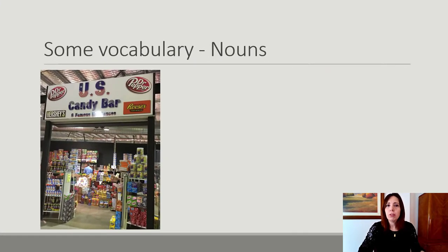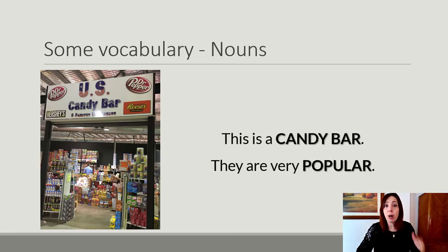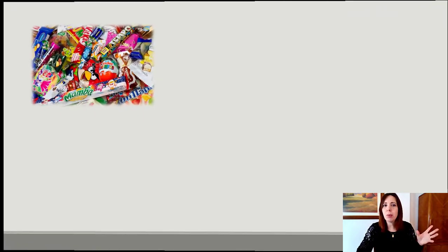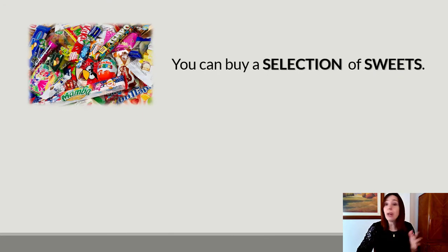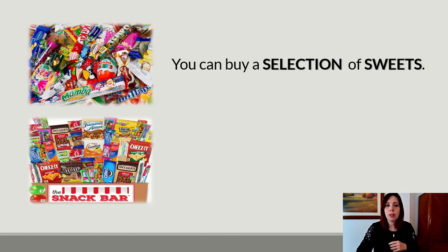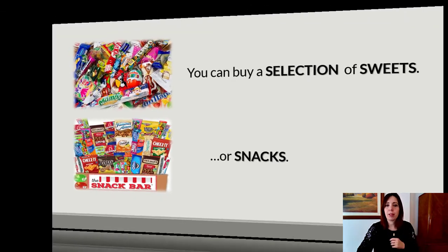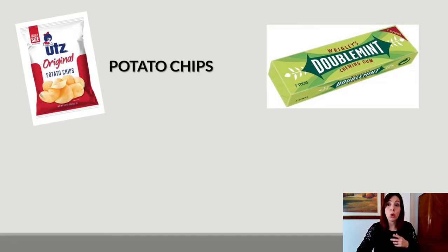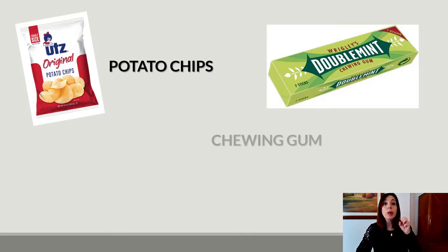So what is this? This is a candy bar. In Argentina we say kiosko, where you can buy sweets and chewing gum. We say candy bar — so you can buy a selection of sweets or snacks. You can also buy potato chips or chewing gum.